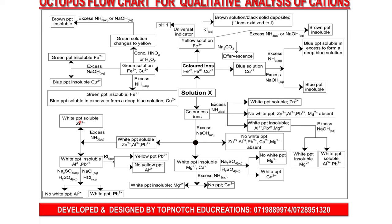Zinc is the only cation that gives a white precipitate soluble in excess with aqueous ammonia. If instead you get a white precipitate insoluble in excess with aqueous ammonia, then aluminum and lead ions are present.